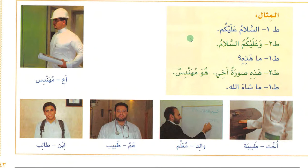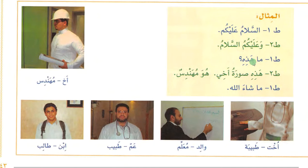First, greet each other: السلام عليكم, the second person replies وعليكم السلام. Then ask: ما هذه — what is this? The word صورة is feminine, that's why we use هذه. Then the second person answers according to the picture: هذه صورة أخي — this is the picture of my brother.